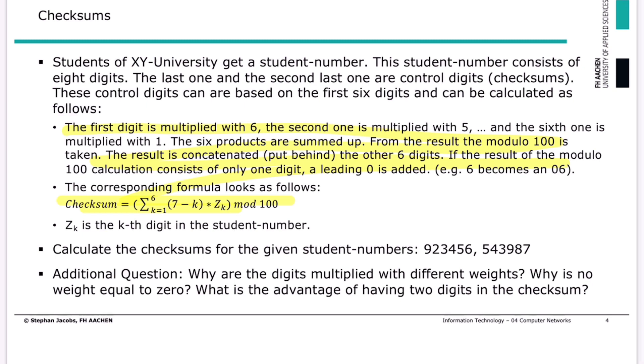In brief, we have a six digit number. So this is our first digit, our second digit. This is called z1, z2. You can see these z's in here and each of those are multiplied with a certain weight.